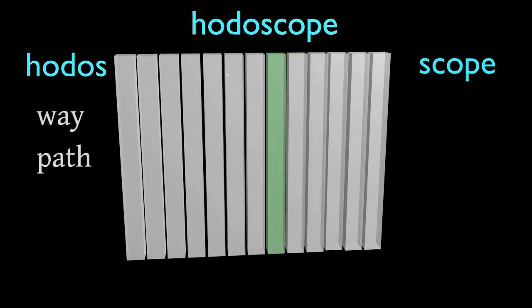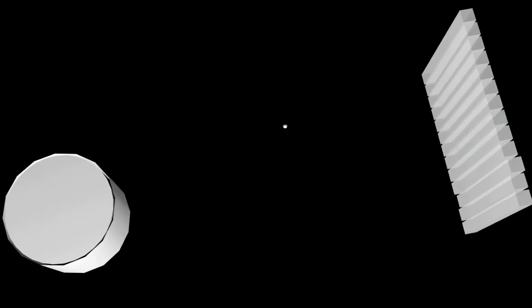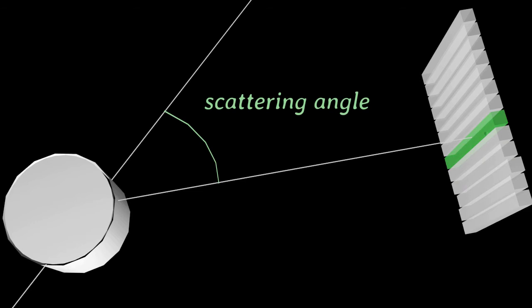Such a device, which consists of an array of organic scintillators, is called a hodoscope, from the Greek hodos for way or path, and scopos an observer. Thus with the help of a hodoscope we can measure the scattering angle of the particle if you place the hodoscope vertically.